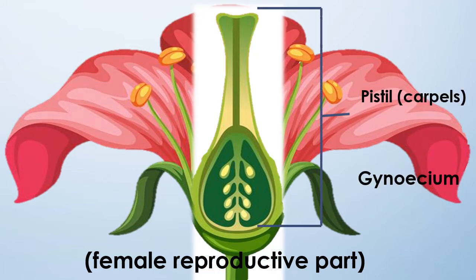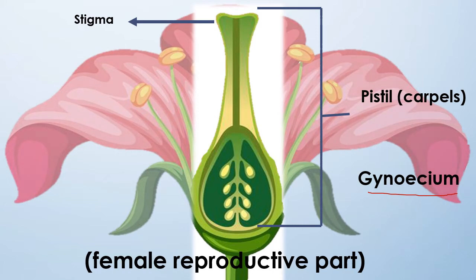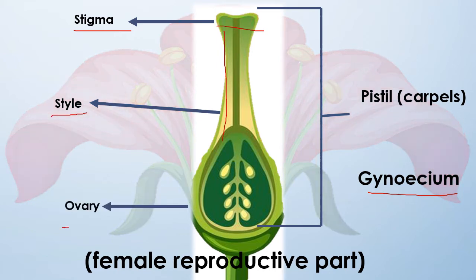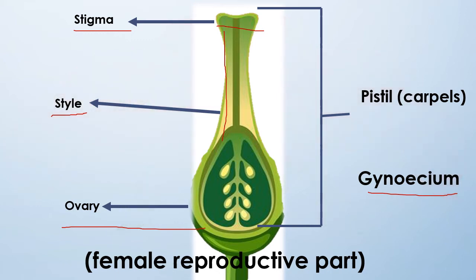The female reproductive part is called the pistil, also known as carpels. The tip portion is called the stigma. Below it is a tube-like structure called the style, and the bottom portion is called the ovary. These together make up the female reproductive parts.